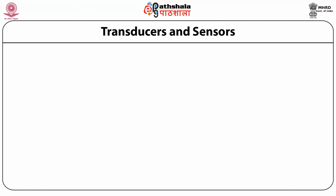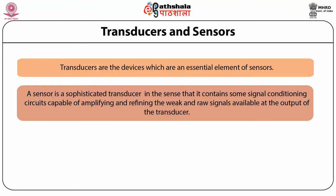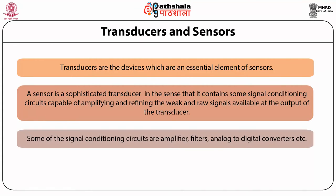Let us compare transducers and sensors. Transducers are the devices which are an essential element of sensors. A sensor is a sophisticated transducer in the sense that it contains signal conditioning circuits capable of amplifying and refining the weak and raw signals available at the output of the transducer. Some of the signal conditioning circuits are amplifiers, filters and analog-to-digital converters.